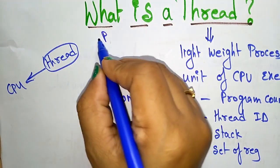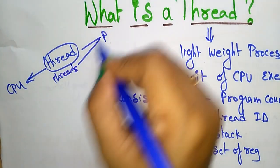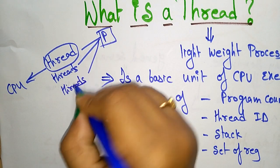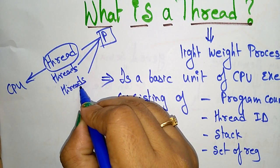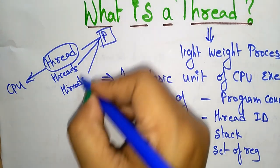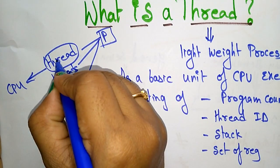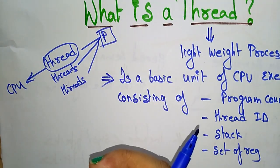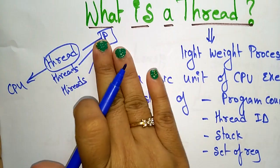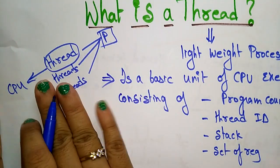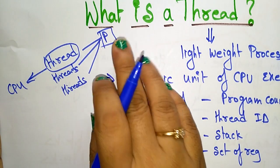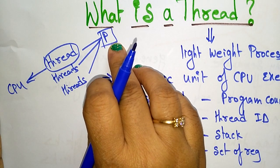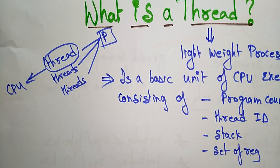A process has multiple threads. That process is divided into multiple threads, each having their own function — this one is doing some operation, and this one is doing some operation. Each thread holds identifications like program counter, thread ID, stack, and set of registers. The thread shares all the resources used by the process. It is not independent — it must share the process's resources and doesn't have its own. Everything is provided by the process itself.